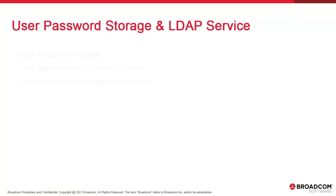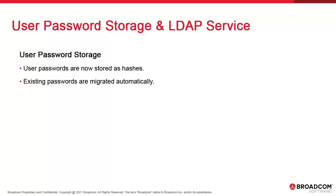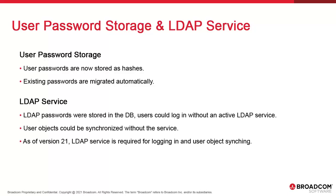User passwords are now stored as hashes using a new algorithm. If you are upgrading from an older version, your existing passwords are migrated automatically. Prior to version 21, once you logged into Atomic via LDAP, your password was cached in the database, effectively making it possible to bypass the LDAP service — that was also true for user object synchronization. This was a security concern and it's been addressed. The LDAP service is now a permanent requirement when logging in, and login objects must be assigned when using the synchronize function.